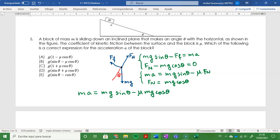You can cancel the masses and take g as a common factor, and so the acceleration is equal to g times sine theta minus mu cosine theta. And that is option E.